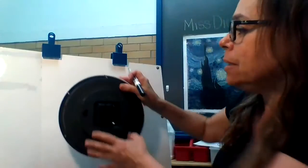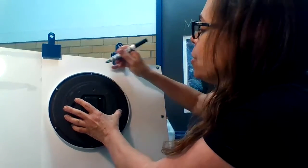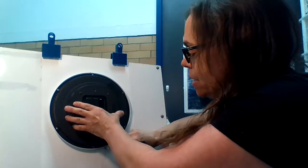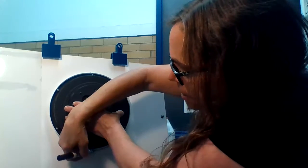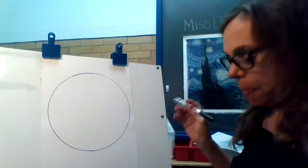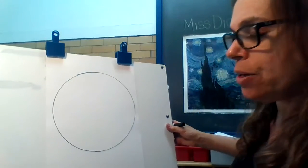It could be a plate, a paper plate, something round. I found this old clock. I'm going to use it to draw my circle. I'm going to place it down and trace around it to make a nice round circle.